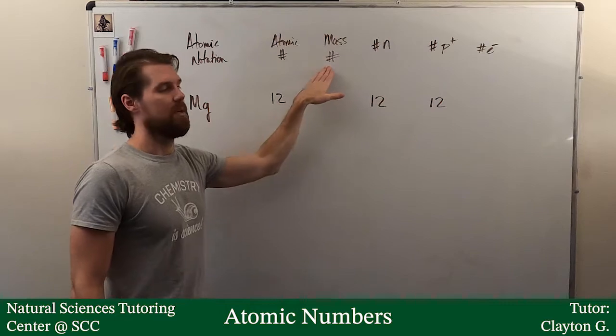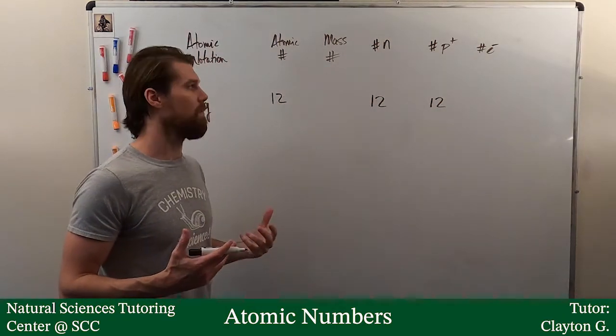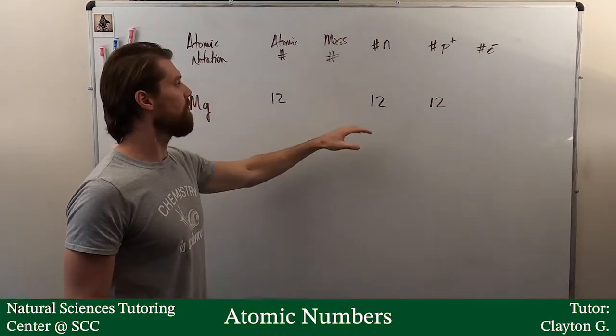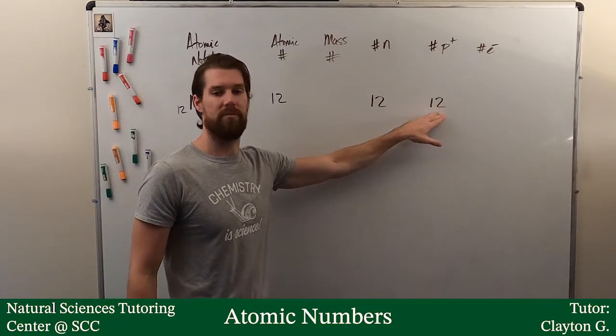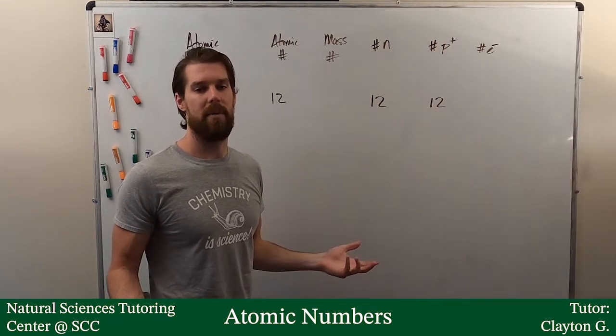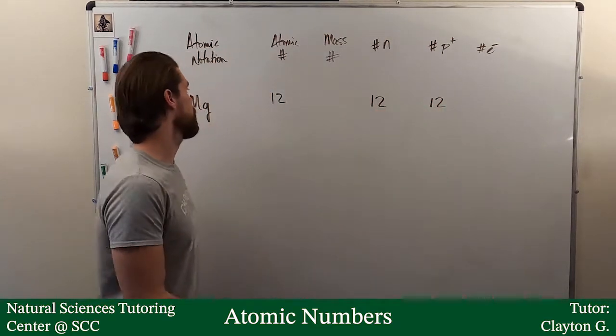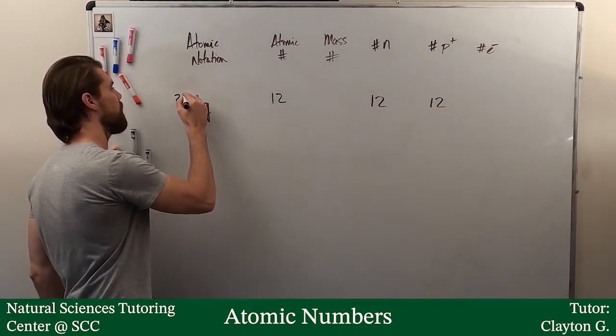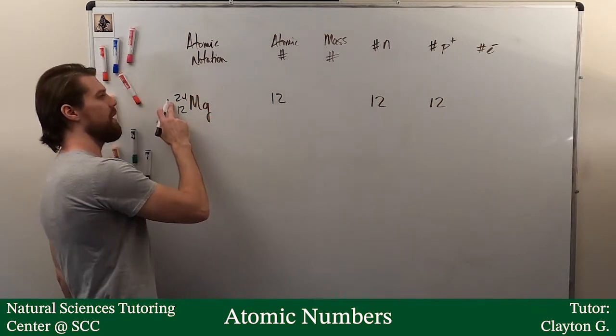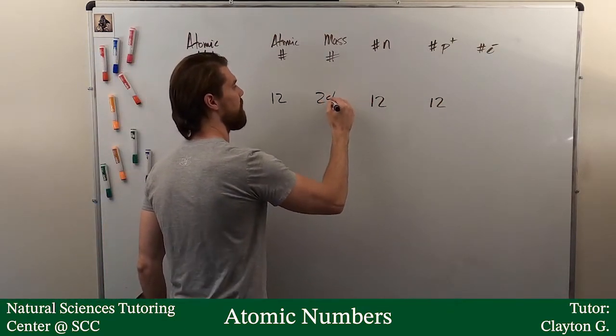If we look at a periodic table, we know that an atomic number 12 refers to magnesium. The mass is basically the number of neutrons plus the number of protons, how many atomic mass units is this thing, generally speaking. So 12 plus 12, that gives us 24. On the top left here, mass number is 24.